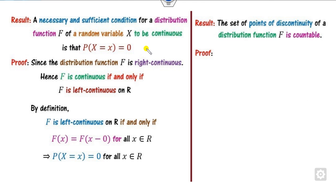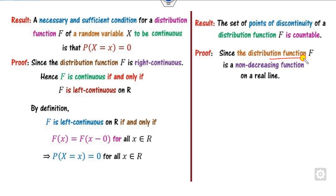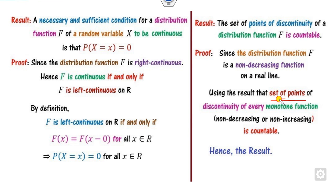The last property is that the set of points of discontinuity of the CDF is countable. The proof is a single line: the CDF is a monotonic function, and from real analysis, the set of points of discontinuity of every monotonic function is countable. Hence, F being monotonic implies its discontinuity set is countable.